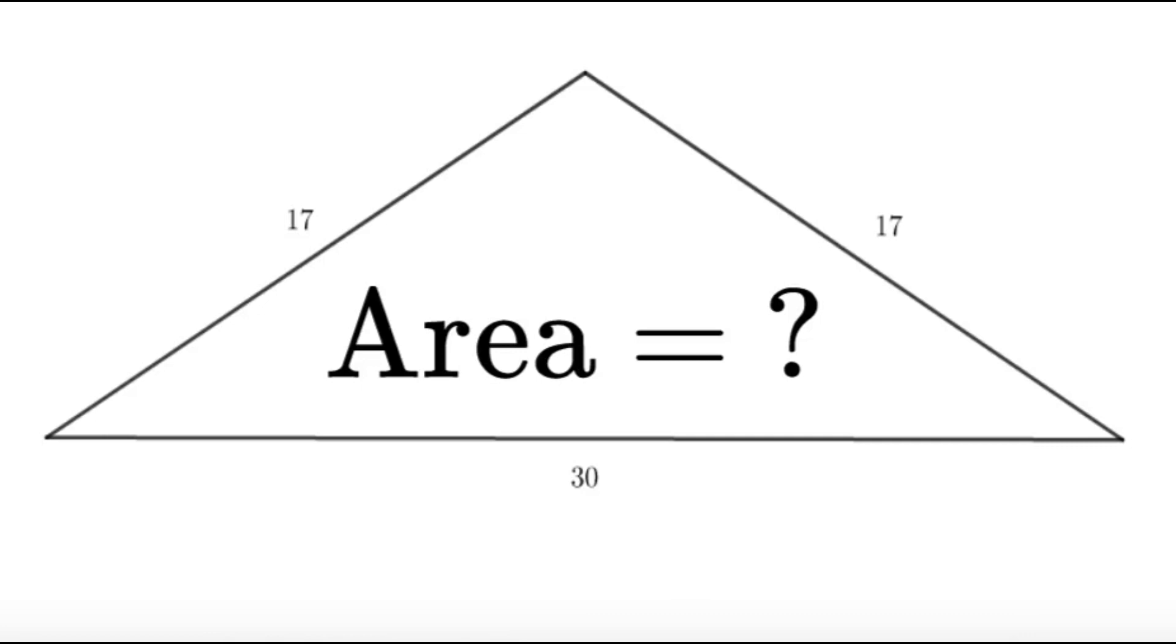If you're done, let us dive into the solution. Let's analyze this. We have two sides of length 17 and one side of length 30. Since we have two equal sides, this triangle is isosceles.